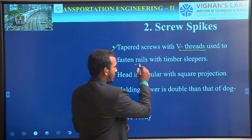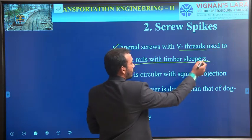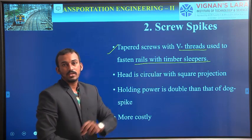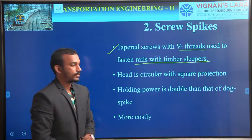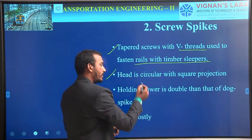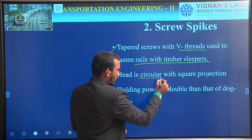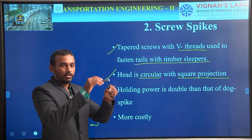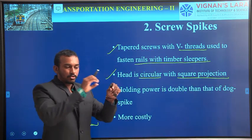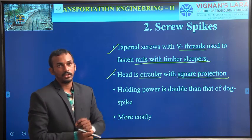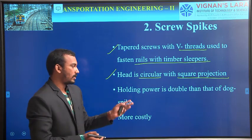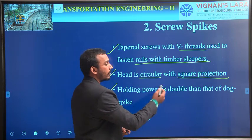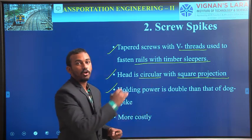The V-thread is used to fasten rails with timber sleepers. This type of spike is also used for timber type of sleepers only. And the next point is it is circular, also with a square cross-section. The head is circular but it also projects a square section. It also has holding power double that of dog spikes.